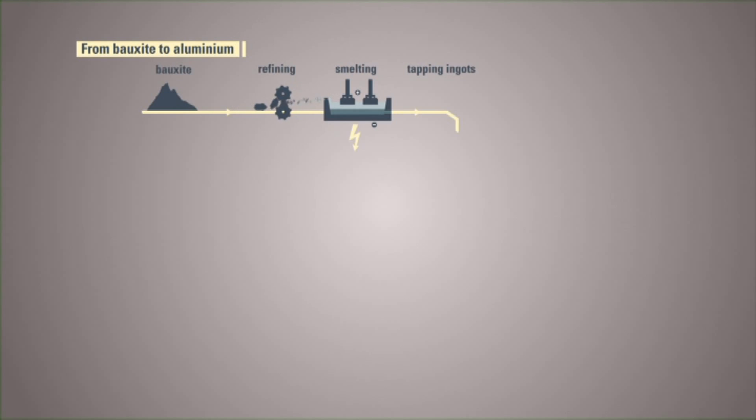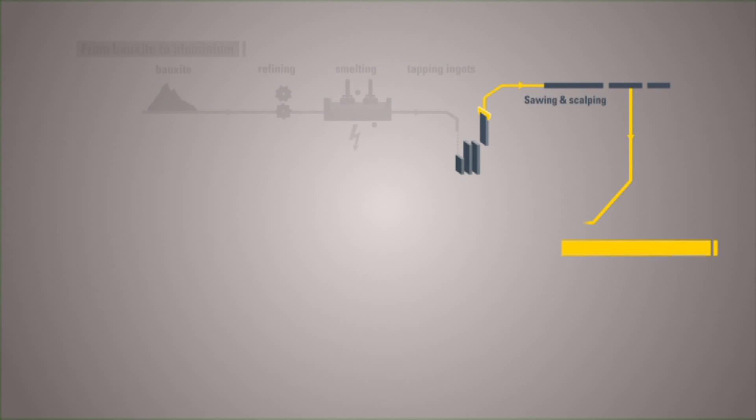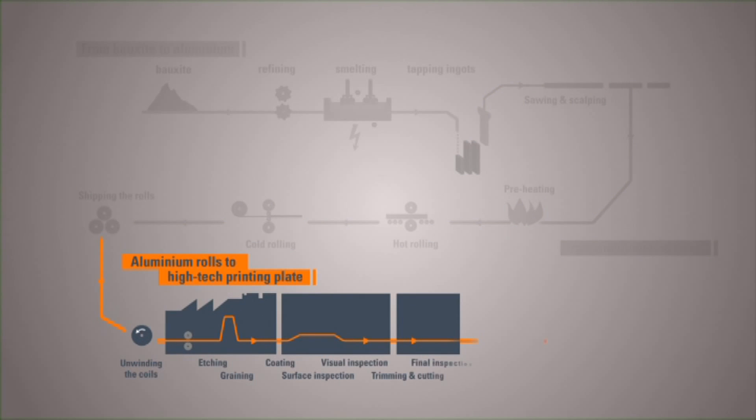The first stage is where the bauxite is converted to aluminum. In the second phase we will show how the raw blocks of aluminum are transformed into rolls. And lastly we will show how these rolls are transformed into the high-tech printing plates which produce the kind of print work we are used to seeing in our everyday lives.